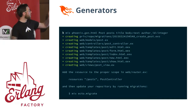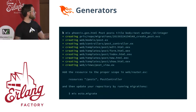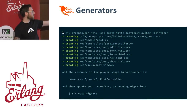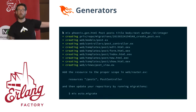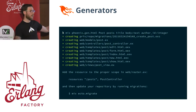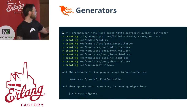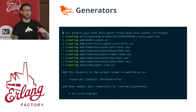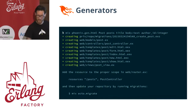We run that and it generates all the code for us, giving us some nice messages to say stick this in your router, which will generate the routes for you. Then you'll run mix ecto.migrate, which will actually migrate the database.